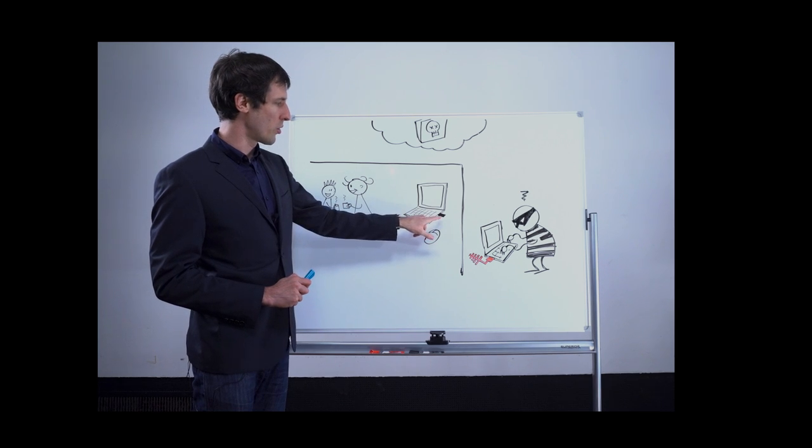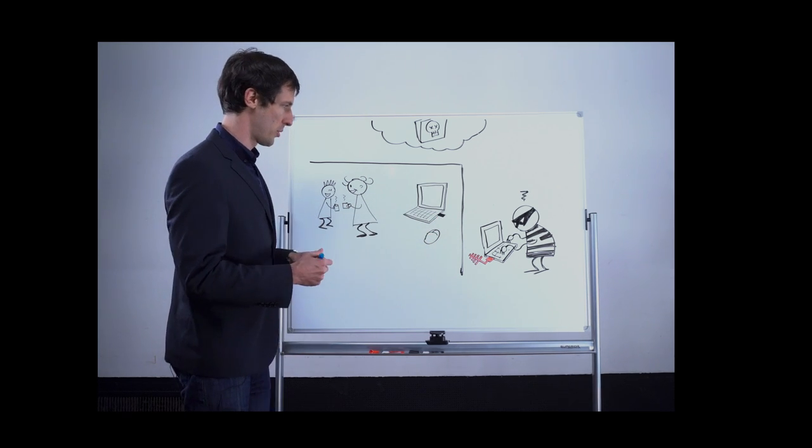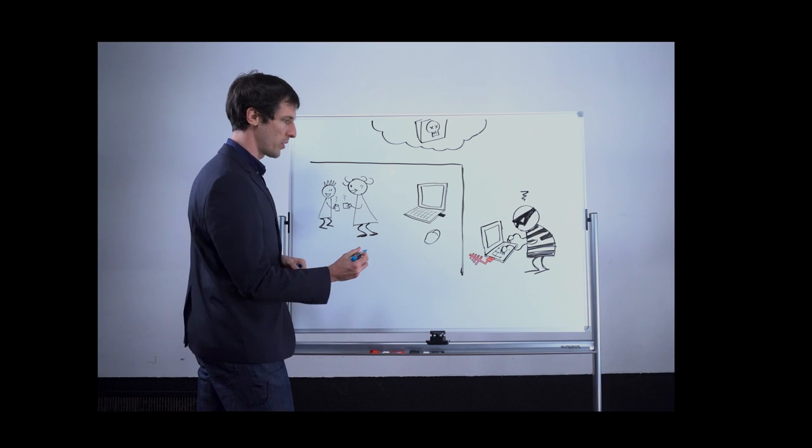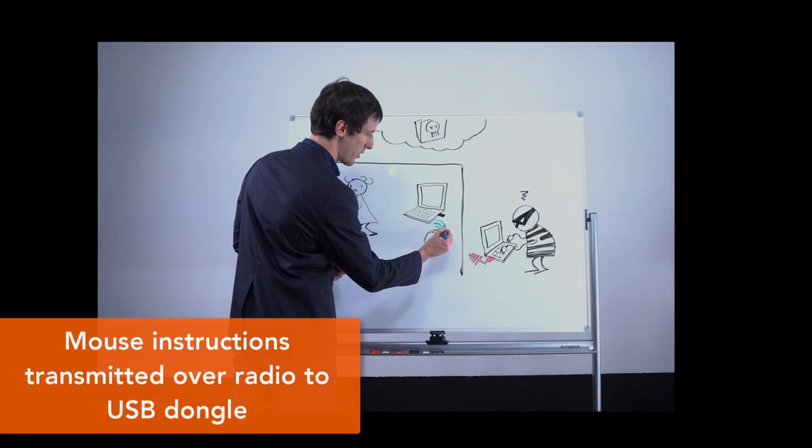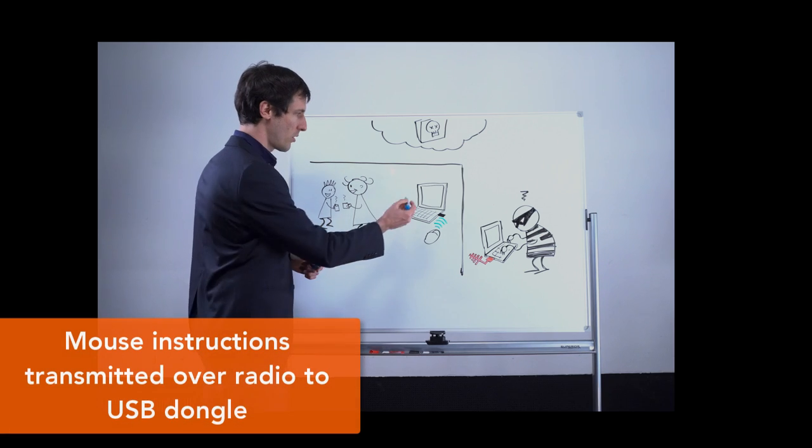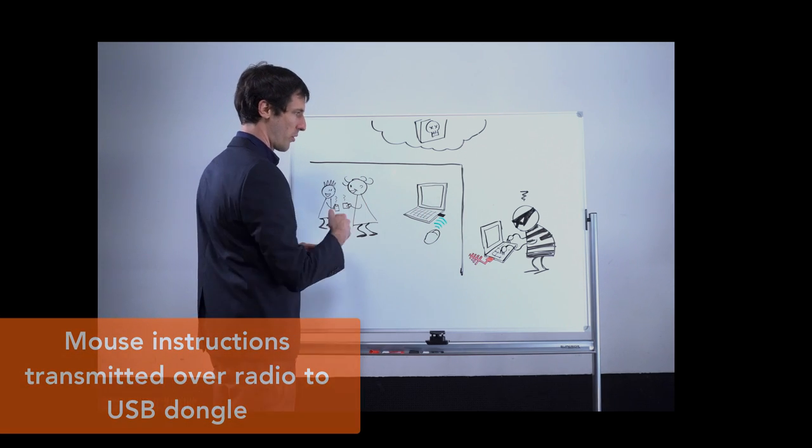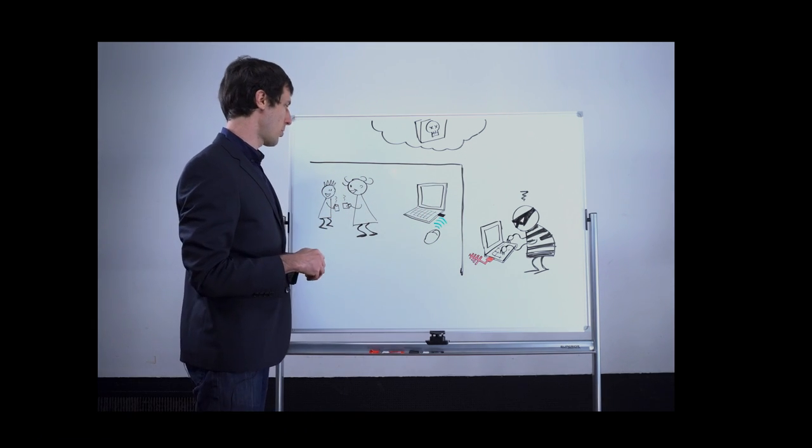The mouse has a USB dongle plugged in to receive the transmissions. So ordinarily as you would be using such a mouse it will transmit using RF the cursor information to the screen and so as you move the mouse the computer knows to move the cursor appropriately.